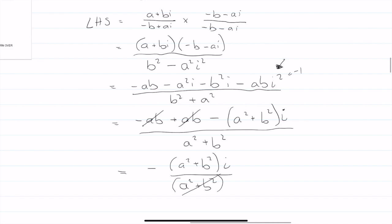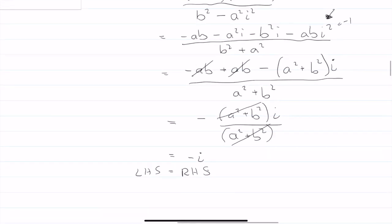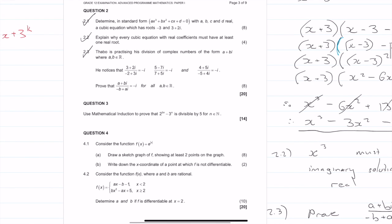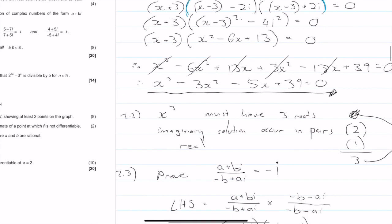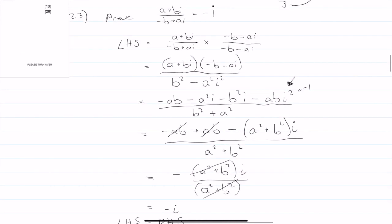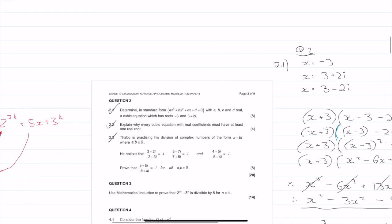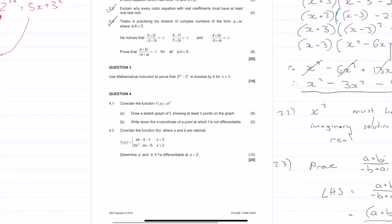The two minus ab and plus ab terms cancel, leaving us with minus a squared plus b squared times i all over a squared plus b squared. These cancel, giving us minus i — which equals the right-hand side. So the proof is complete. Not too difficult, just a lot of algebra. Thanks for watching guys, I hope you found this useful. We've done question 3, so we're moving on to question 4 in the next video.